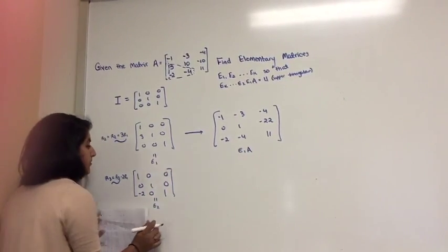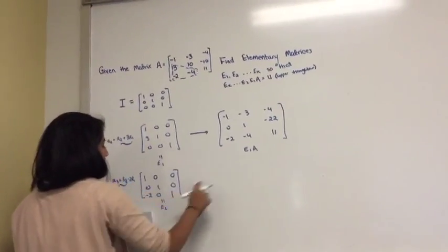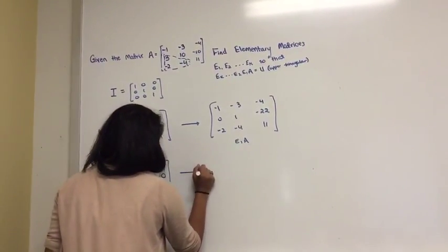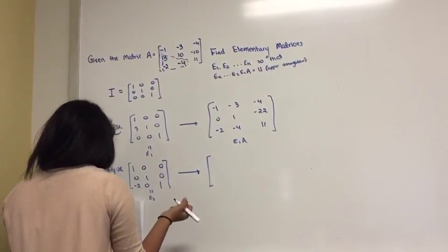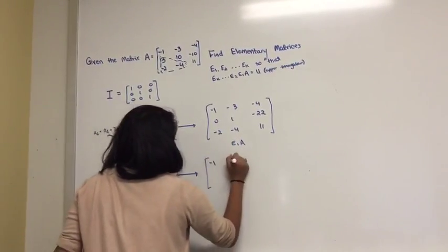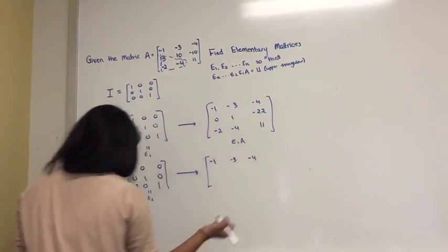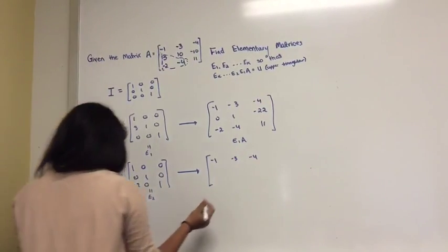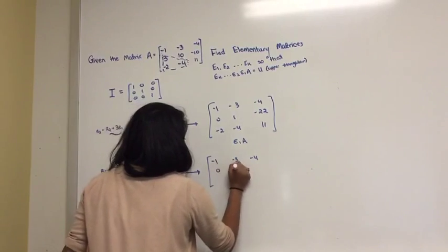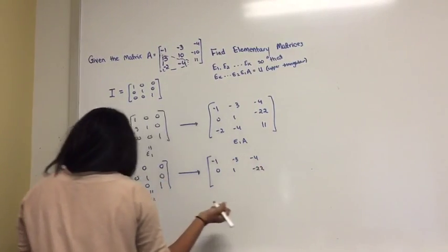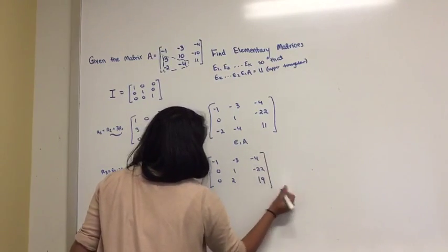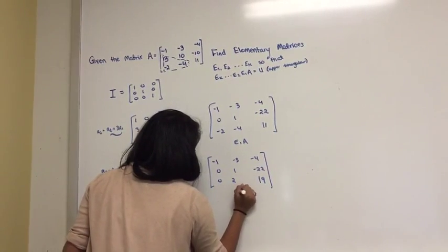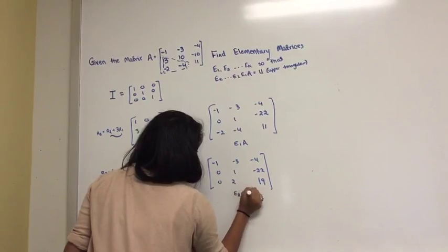And so now you want to perform that. You're going to multiply E1A times E2 to get your next set of matrices, or your next matrix, and that will be negative 1, negative 3, negative 4, 0, 1, negative 22, and 0, 2, 19. And what this is, this is E2, E1A.